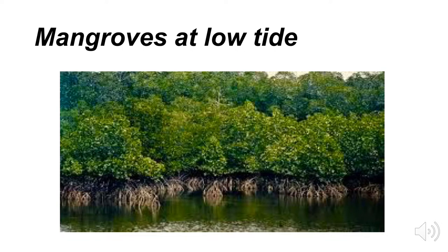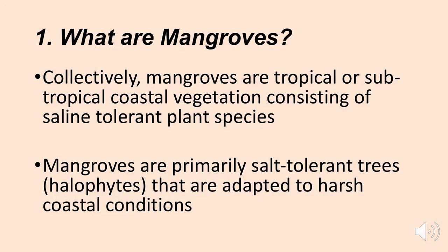At low tide you can see the plant roots, very characteristic of a mangrove swamp — a massive root system. Collectively, mangroves are tropical or subtropical coastal vegetation consisting of saline-tolerant plant species. They're basically salt-tolerant trees called halophytes, adapted to harsh coastal conditions where you often have a mix of fresh water and salt water. Not many things grow in salt water, but mangrove species are well adapted.